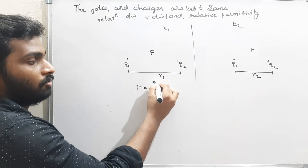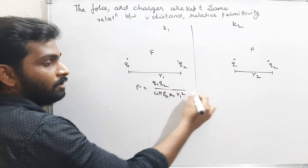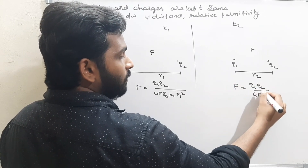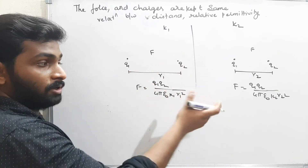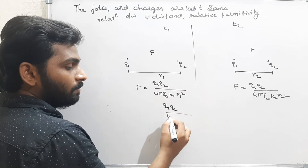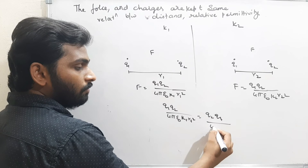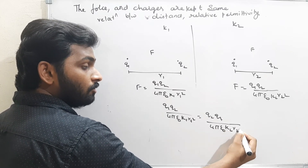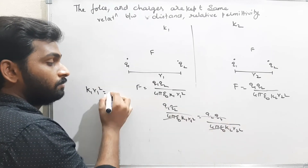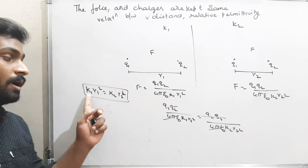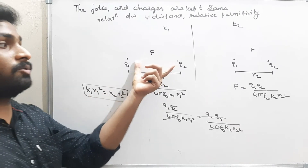To derive this: equating the forces, Q1 Q2 / (4π ε₀ K1 R1²) = Q1 Q2 / (4π ε₀ K2 R2²). Cancelling common terms, we get K1 R1² = K2 R2². If the forces and charges are the same in two different mediums, this relation between distance and dielectric constant must be satisfied.